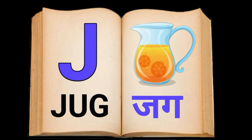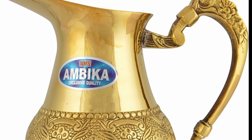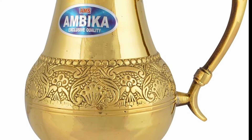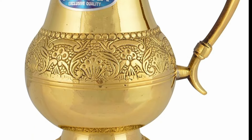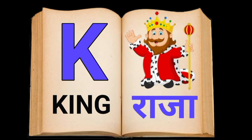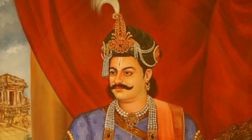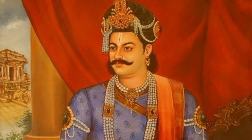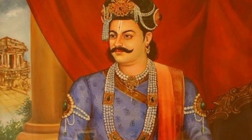J for Jug, Jug meaning jug. K for King, King meaning raja.